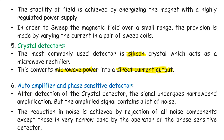After the crystal detector, the signal undergoes narrow-band amplification by the audio amplifier. However, the amplified signal contains a lot of noise — the signals from the crystal detector are not very clean. To remove the noise, a phase-sensitive detector is used. The reduction in noise is achieved by rejection of all noise components except those in a very narrow band by the operation of the phase-sensitive detector.